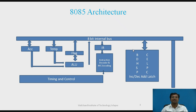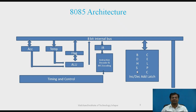There is a register array. The registers are BC, DE, HL, SP, and PC. B, C, D, E, H, and L are 8-bit registers. Depending on the requirement, these 8-bit registers are paired as BC, DE, and HL so that they act as 16-bit register pairs. SP is a 16-bit register. PC is a 16-bit register. There is also an increment or decrement address latch circuit.